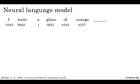Let's say you're building a language model and you do it with a neural network. So during training, you might want your neural network to do something like input, I want a glass of orange, and then predict the next word in the sequence. And below each of these words, I've also written down the index in the vocabulary of the different words. So it turns out that building a neural language model is a reasonable way to learn a set of embeddings. And the ideas I present on this slide were due to Yoshua Bengio, Rejean Ducharme, Pascal Vincent, and Christian Jauvin.